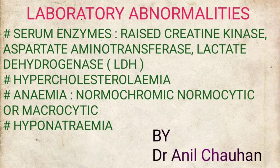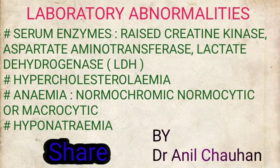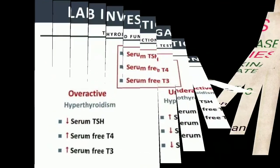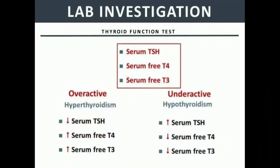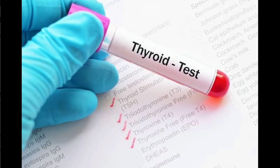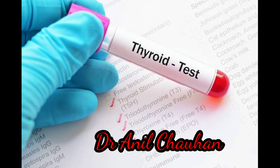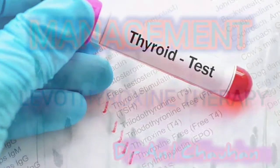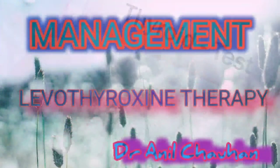Laboratory abnormalities in hypothyroidism include raised serum amylase, creatinine kinase, aspartate aminotransferase, lactate dehydrogenase (LDH), hypercholesterolemia, normochromic normocytic or macrocytic anemia, and hyponatremia. Lab investigations include thyroid function tests: serum TSH, serum free T4 and T3 — with increased thyroid stimulating hormone and decreased T3 and T4.